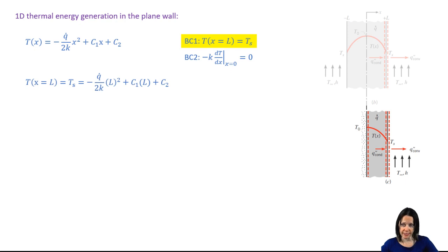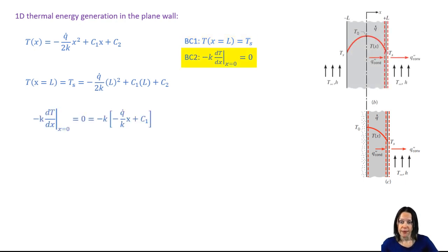We apply the first boundary condition and get this equation. Then we apply the second. And we remember that we've already solved for dt dx when we were obtaining the general solution before. And we get that C1 is equal. And we can use that to solve for C2.